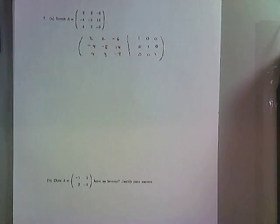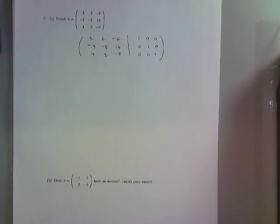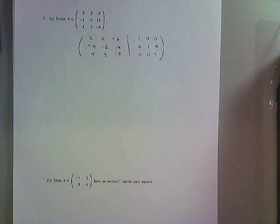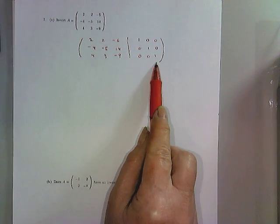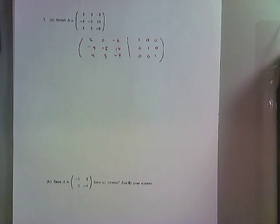For problem number seven, we want to invert A. It looked to me like A didn't have any special properties, and I didn't remember the formula for inverting a 3x3. So I decided to use the Gauss-Jordan method for finding the inverse, and I appended A with the identity matrix.